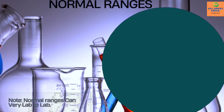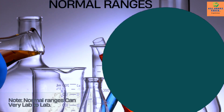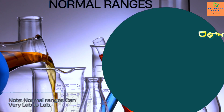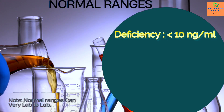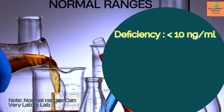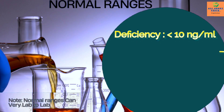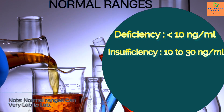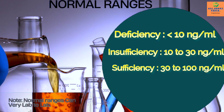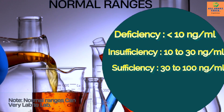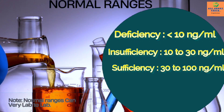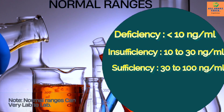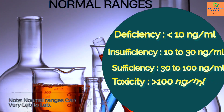Normal ranges — note that normal ranges can vary lab to lab. Deficiency: less than 10 nanograms per milliliter. Insufficiency: 10 to 30 nanograms per milliliter. Sufficiency: 30 to 100 nanograms per milliliter. Toxicity: greater than 100 nanograms per milliliter.